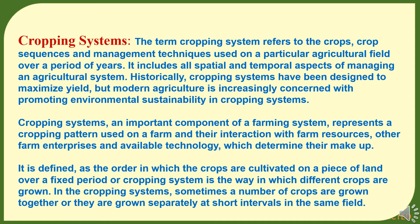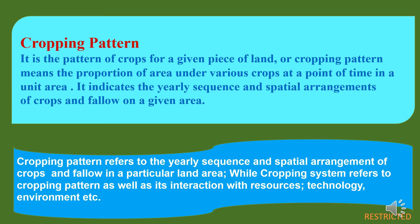In the cropping systems, sometimes a number of crops are grown together or they are grown separately at short intervals in the same field. Cropping pattern is the pattern of crops for a given piece of land, or it means the proportion of area under various crops at a point of time in a unit area. It indicates the yearly sequence and spatial arrangements of crops and fallow on a given area. Cropping patterns refers to the yearly sequence and spatial arrangement of crops and fallow in a particular land area, while cropping system refers to cropping patterns as well as its interaction with resources, technology, and environment.